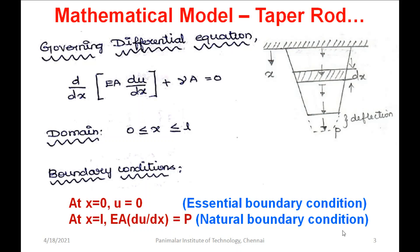There are two types of boundary conditions in the taper rod problem. At the fixed end, where x equals 0, displacement u equals 0. This is called the essential boundary condition — when a boundary is defined in terms of the field variable itself (here, displacement), it is called essential.